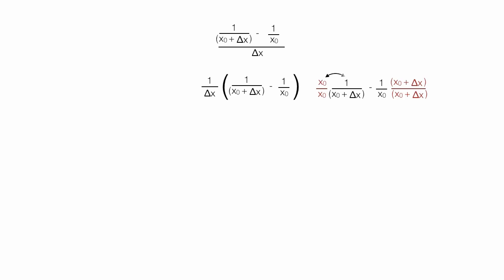So now I multiply x0 times 1, which is x0, and I'm going to do the whole numerator first. Now I take negative 1 times x0, which is negative x0, and now negative 1 times delta x, which is negative delta x. And all of this divided by x0 times x0 plus delta x.